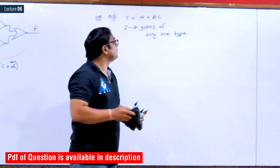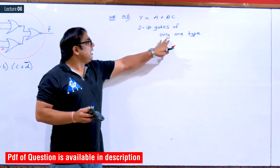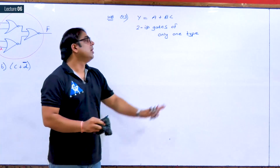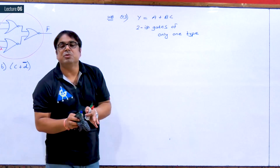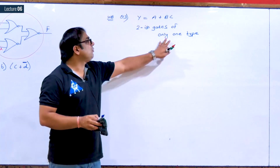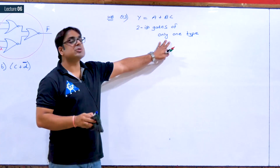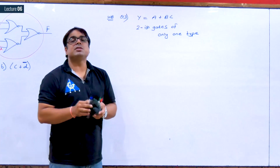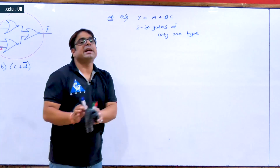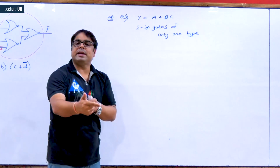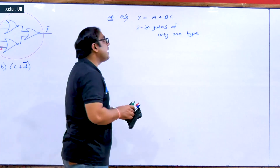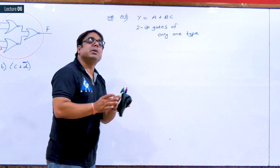The third question: we have to implement A+BC using two-input gates of only one type. Note the question is not asking for minimum NAND gates or minimum NOR gates specifically — it says gates of only one type. So we must try both NAND and NOR gates and whichever gives the lesser count is the final answer.